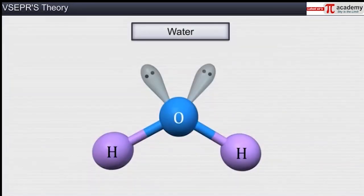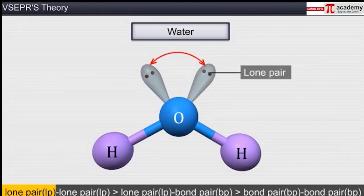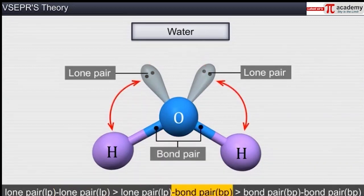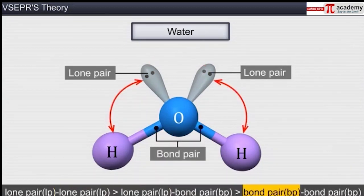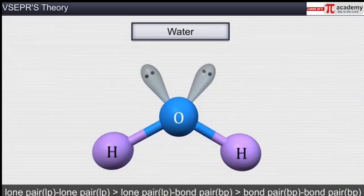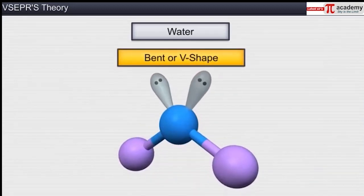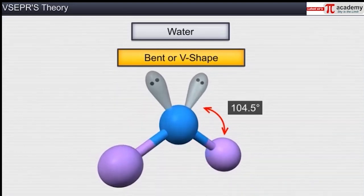In a water molecule, the central oxygen atom has two bonded pairs of electrons and two lone pairs of electrons. We have seen that repulsion between lone pair–lone pair and lone pair–bond pair is more than bond pair–bond pair repulsion. Thus, the two lone pairs on the central oxygen atom cause the molecule to distort from its regular geometry to a bent or V-shape, making a bond angle of 104.5 degrees.